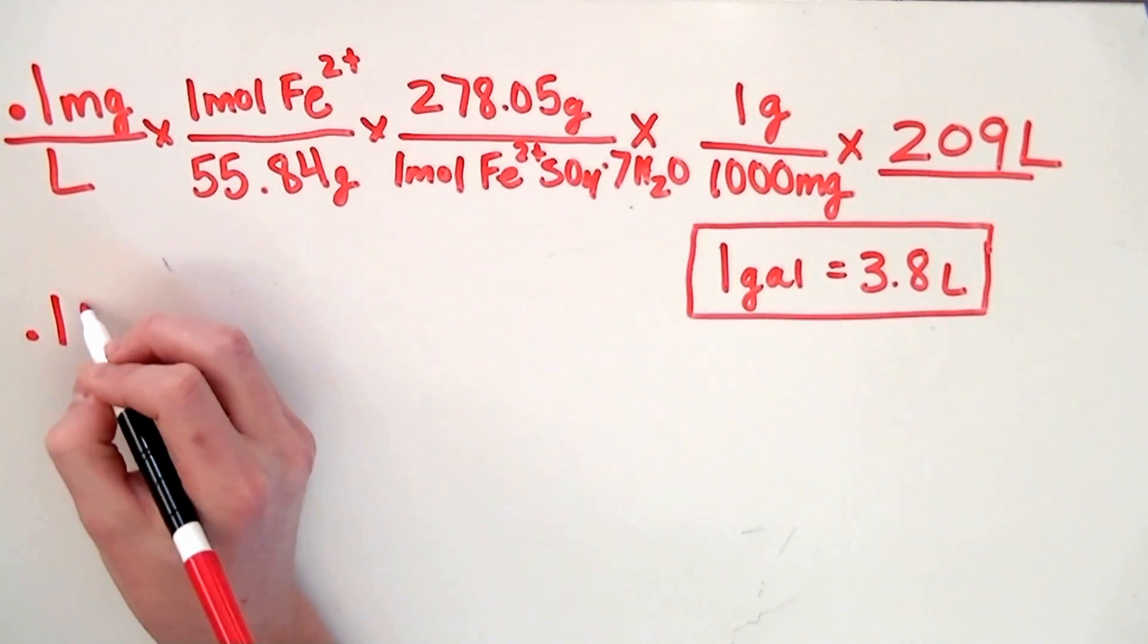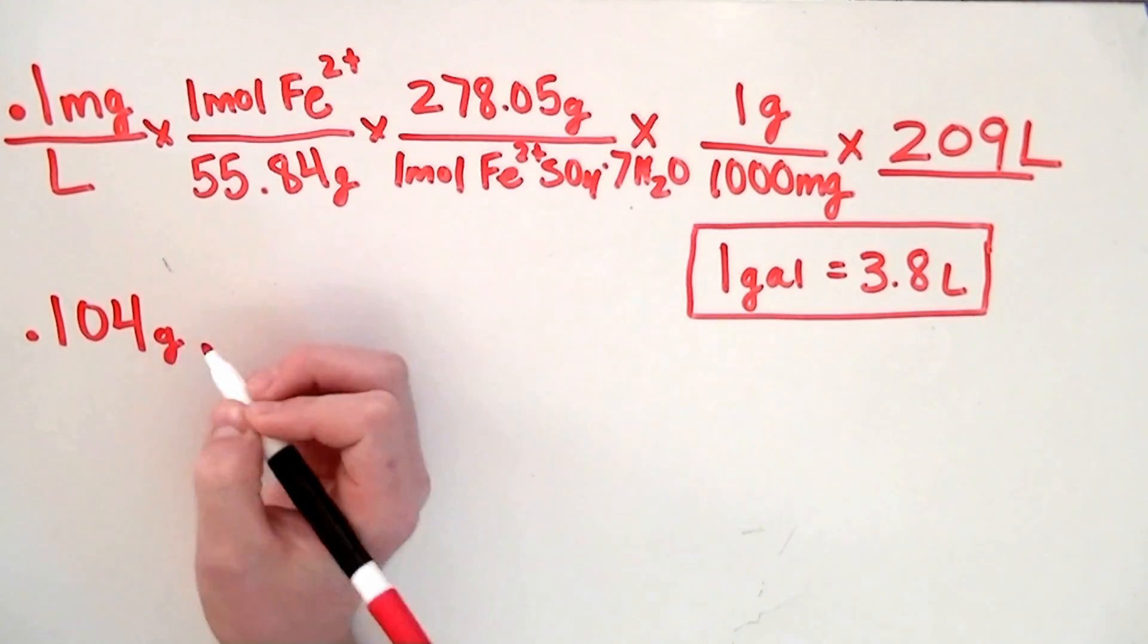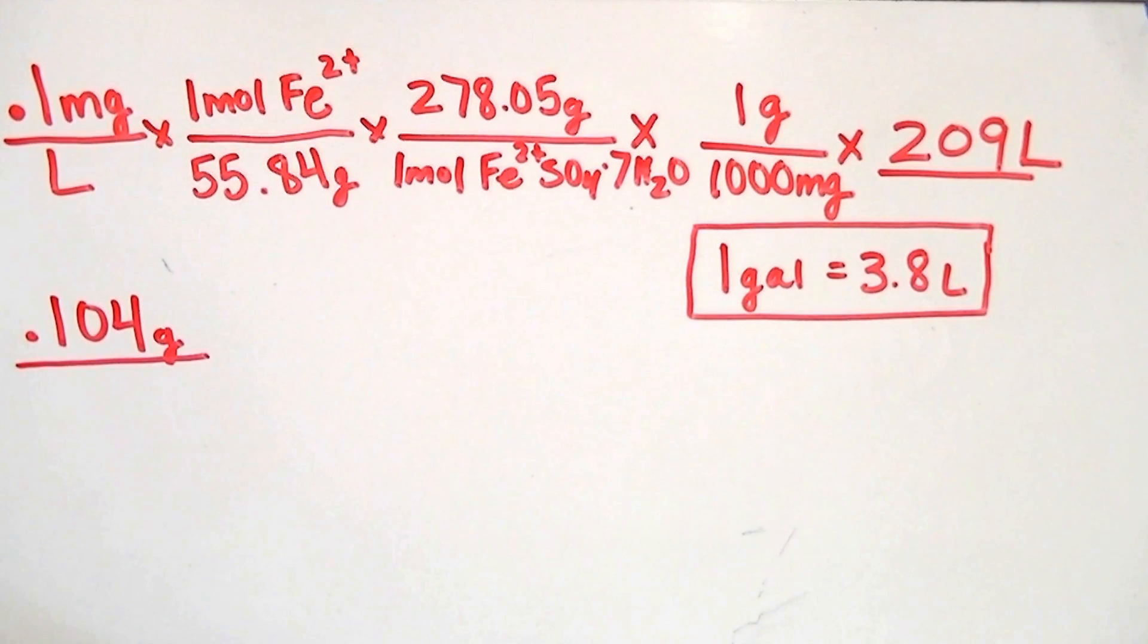When we do the math above, we get 0.104 grams, which is the amount of iron 2 sulfate we would add to our aquarium if we were dry dosing.